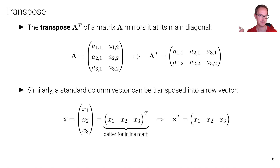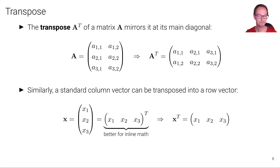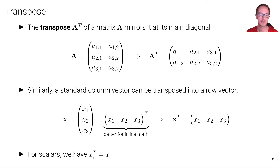When writing math in papers or slides, it's inconvenient to write a column vector inline because it creates a lot of empty space. So we often write a column vector as a row vector with the transpose symbol, indicating it is actually a column vector — just written as a row to save space in mathematical equations. For scalars, the transpose of a scalar is the scalar itself; nothing changes since there is only one element.